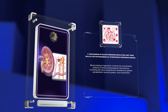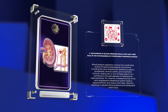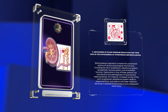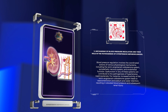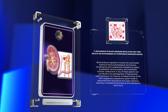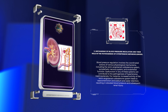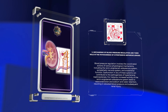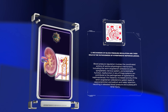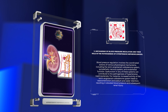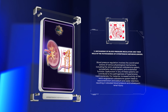Blood pressure regulation involves the coordinated actions of various physiological mechanisms, including the renin-angiotensin-aldosterone system, sympathetic nervous system, and endothelial function. Dysfunction in any of these systems can contribute to the pathogenesis of hypertensive nephrosclerosis. For instance, increased activity of the renin-angiotensin-aldosterone system leads to vasoconstriction and sodium and water retention, resulting in elevated blood pressure and subsequent renal injury.